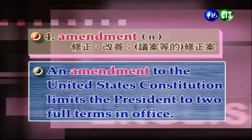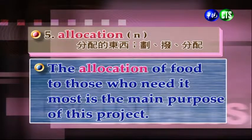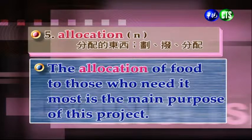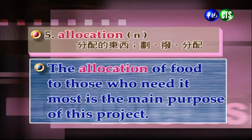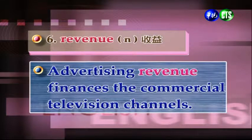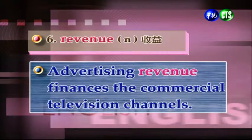再往下看：Allocation。Allocation，名詞，分配的東西、劃播、分配。例句：The allocation of the food to those who need it most is the main purpose of this project. 這個專案的主要目的，就是要把糧食分配給最需要的人。The allocation of the food，就是食物、食糧的分配。我們往下看Revenue。Revenue，名詞，收益。Advertising revenue finances the commercial television channels. 廣告的收入給予商業電視頻道財務上的支持，就是提供資金給商業電視頻道。